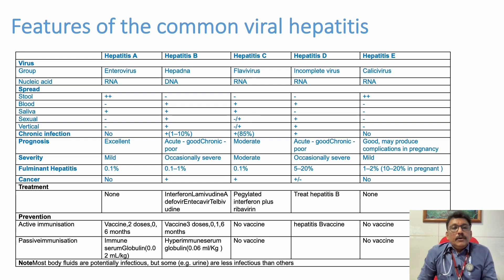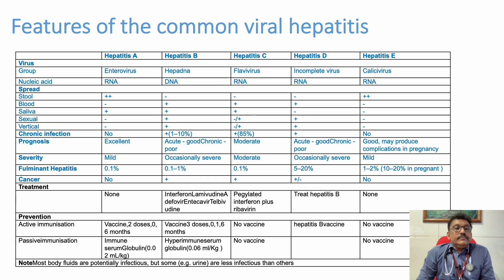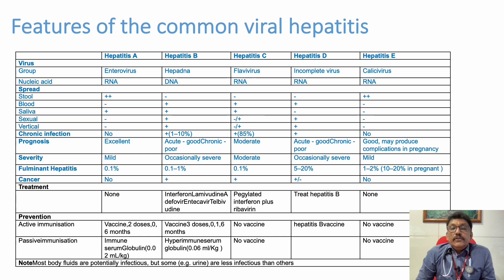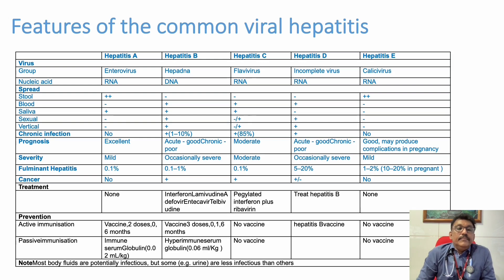Another important cause of acute hepatitis is viral hepatitis, especially hepatitis A, B, C, and E. The incidence of fulminant hepatitis is: hepatitis A 0.1%, hepatitis B 0.1–1%, hepatitis C 0.1%, hepatitis D 5–20%, and hepatitis E 10–20% in pregnant ladies. We should be very careful when treating hepatitis E in pregnant women.